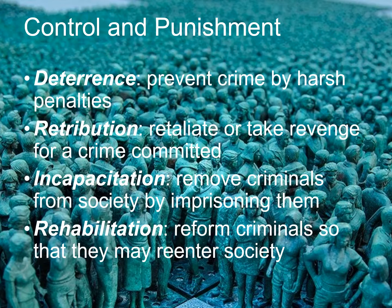Deterrence: if you're in a hurry to class and you start to exceed the speed limit, do you slow down because you don't want to get a speeding ticket? If so, the potential penalty has deterred you from committing the crime. Retribution: have you heard the saying 'an eye for an eye'? That's the premise behind retribution — you've committed a crime, therefore society has the right to retaliate. Incapacitation may depend upon the severity of the crime. If our society imprisoned every person who jaywalked, there would be few people left in society — but that penalty might deter people from doing it. That's part of the logic behind creating sentences for crime.